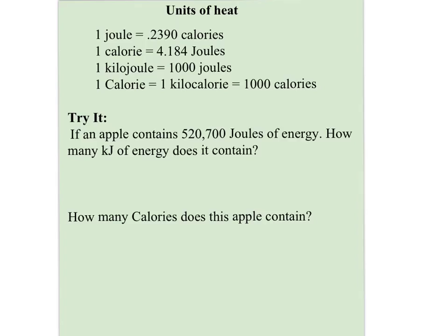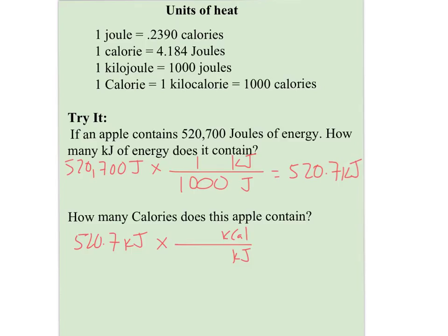If I wanted to convert 520.7 kilojoules to Calories, remember that big-C Calories is really a kilocalorie. So to go from kilojoules to kilocalories, I can use the conversion factor that one kilocalorie equals 4.184 kilojoules - because if calories times a thousand gives kilocalories, and joules times a thousand gives kilojoules, then the ratio holds for both. Taking 520.7 divided by 4.184, I get 124.5 kilocalories.